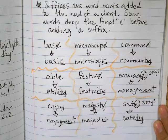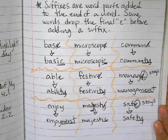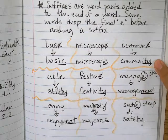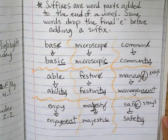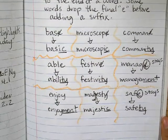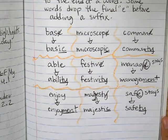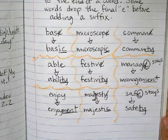The same thing goes with 'microscopic' — from 'microscope' to 'microscopic.' 'Commune' to 'community' — instead of -ic, we put the suffix -ity, so we drop the e. For 'able' to 'ability,' that one's a little different — you don't drop the e, and you actually have to add another i between the b and the l in order to add the -ity.